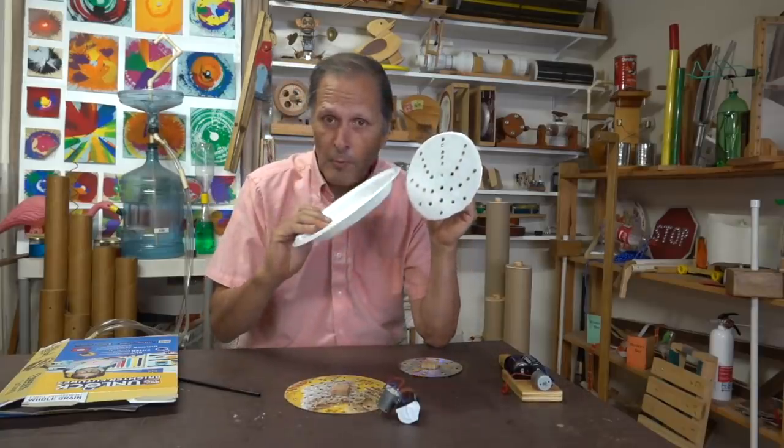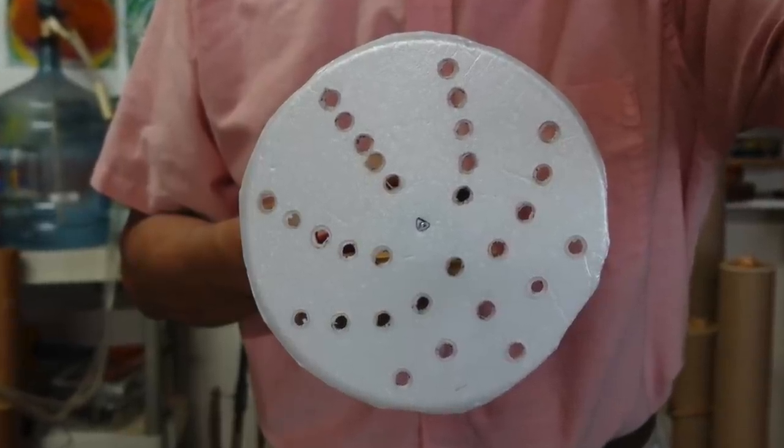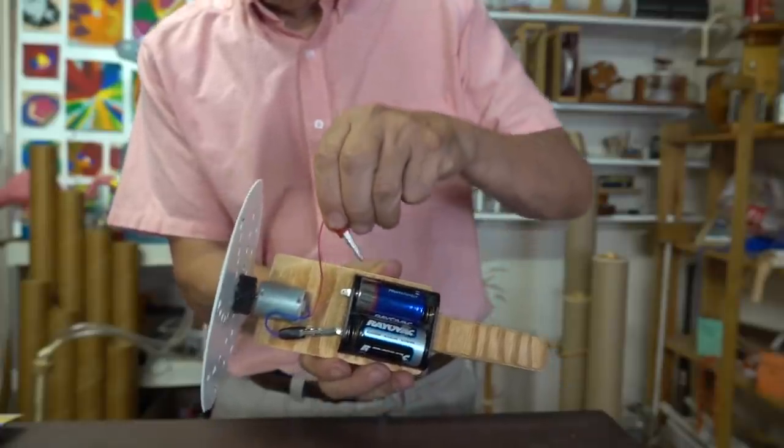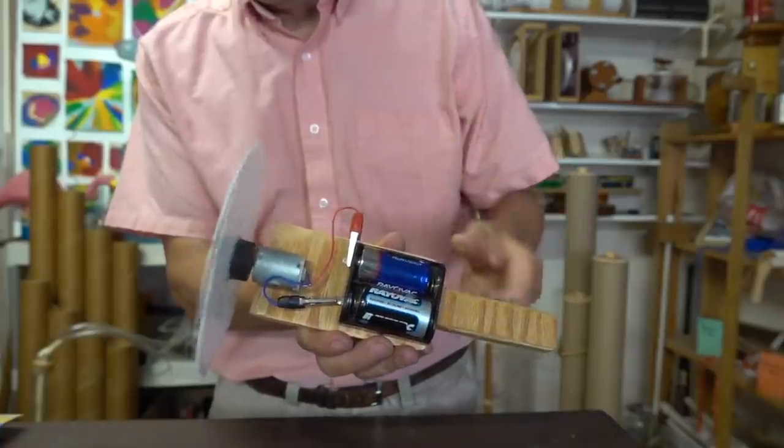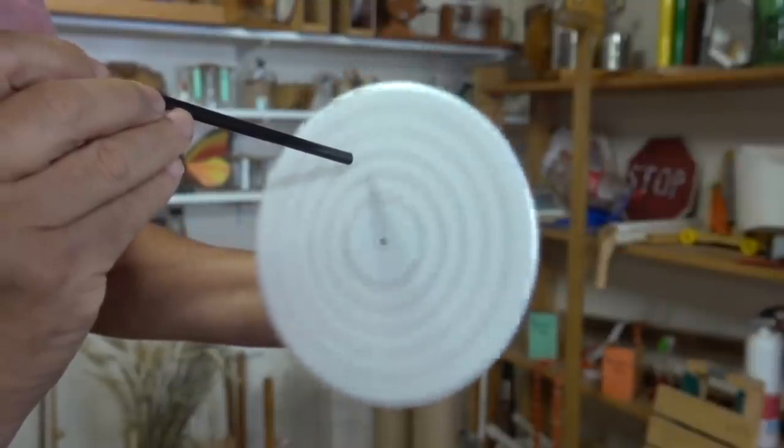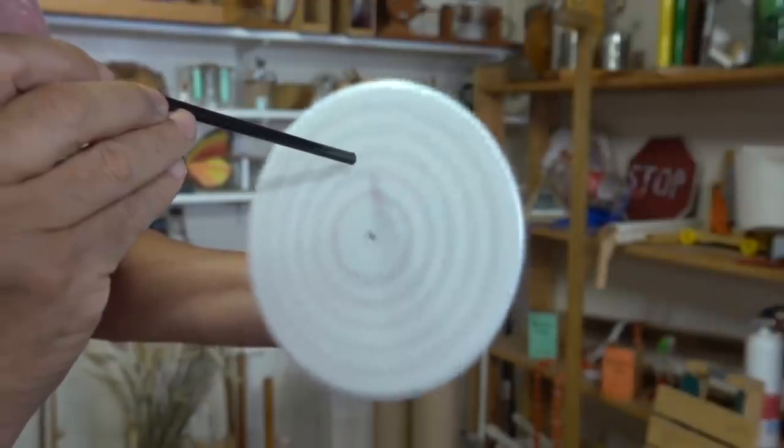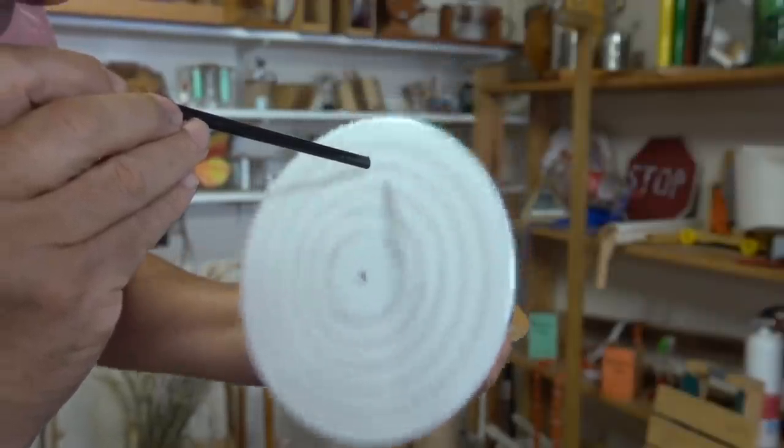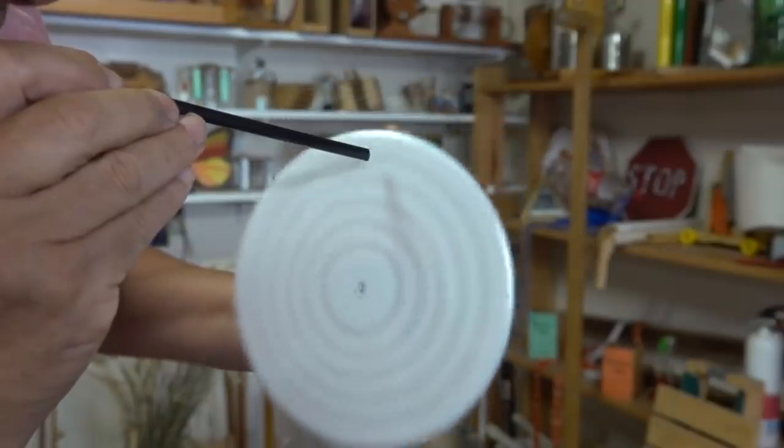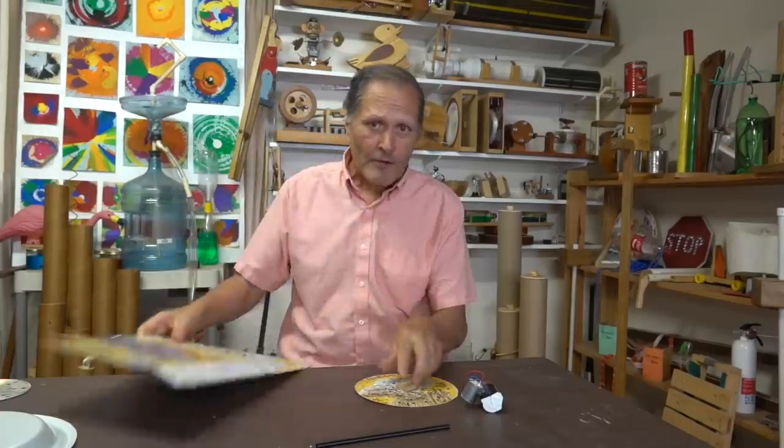Now that we've seen discs made out of CDs, let's take a look at some other materials. For example, this one was made out of a foam plate. And finally, this last disc is made out of the cardboard from a cereal box.